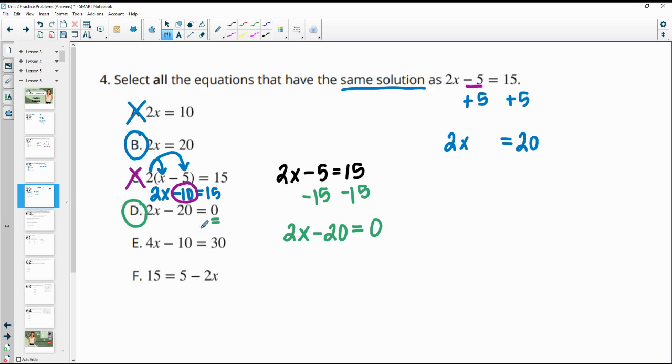Then in part E, we have 4x minus 10 equals 30. So everything has kind of gotten bigger here. And really, 4x from 2x is just double. Negative 5 times 2 gives us negative 10. And 30 times 2 gives us, sorry, 15 times 2 gives us 30. So all we did was multiply 2 to each of these. And then we got 4x minus 10 equals 30. So E is equivalent.